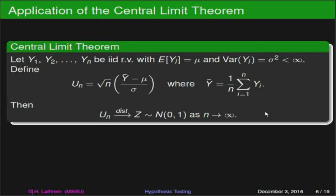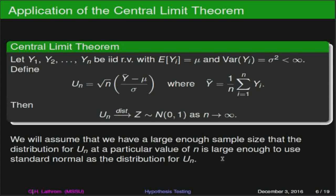What we will assume in pretty much everything we're doing is that we have a large enough sample that we are justified in assuming that the distribution for U-sub-n is well approximated by the standard normal. In some statistics classes the first assumption people make is to just assume a normal distribution. But we really can't assume that. What we might be able to assume is that we have enough data that the distribution of the means of our data is normally distributed — that's the more proper way to say it, rather than assuming everything is normally distributed, which as we've seen in previous videos is totally not true.